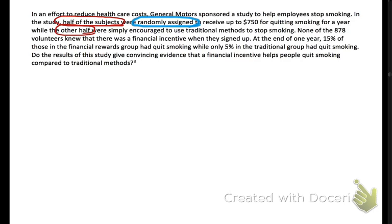The $750 is interesting but not the key detail. None of the 878 volunteers — there's our sample size, n = 878 — knew there was a financial incentive when they signed up. That's a well-designed experiment; you don't want the group without the financial incentive to be upset and stressed. We are told they're volunteers — not a random sample. At the end of the year, 15% of those in the financial rewards group had quit smoking, while only 5% in the traditional group had quit smoking.